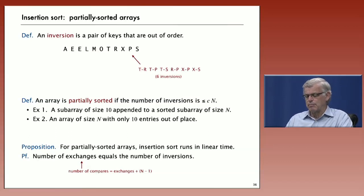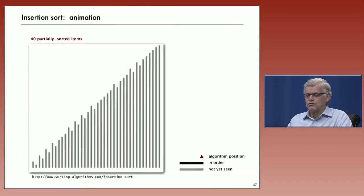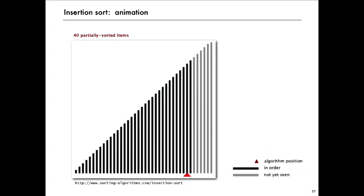So let's look at how that looks in the animation. Here's a partially sorted array. And you can see that insertion sort quickly gets the job done. We're going to take advantage of this a little bit later in this lecture. That's insertion sort, our second elementary sorting method.